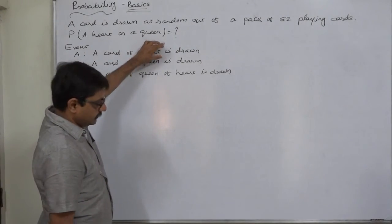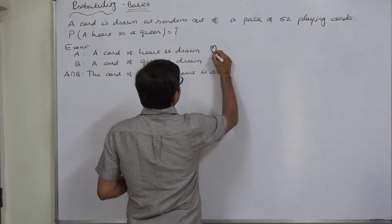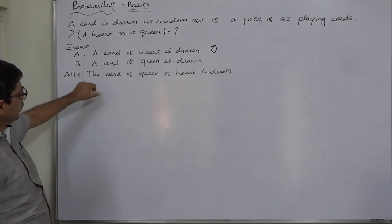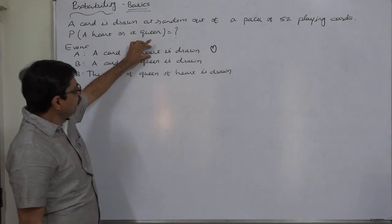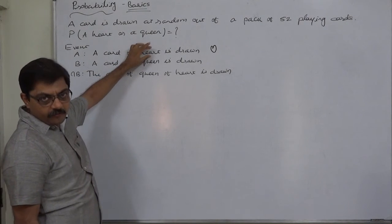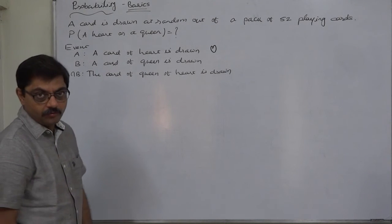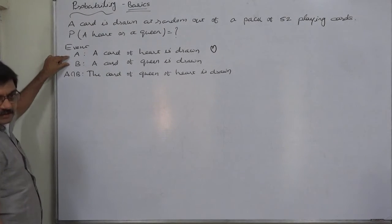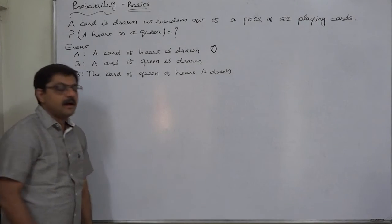There are 13 cards of heart. There are four cards of queen, and one more possibility is in every set there is a card of queen. So a card of heart of queen can also be drawn, and that is nothing but the intersection of the two events. Joint happening of two events: card being a card of queen as well as heart.